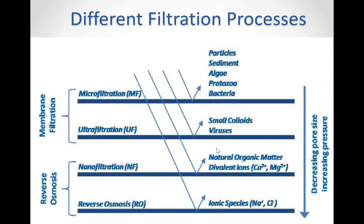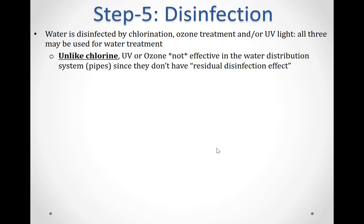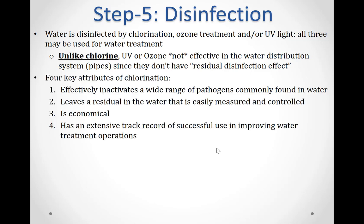In the diagram that follows, you can see different membrane filtration processes and what they can be used for. The fifth step is disinfection. After water has been filtered, a disinfectant may be added in order to kill any remaining parasites, bacteria, and viruses, and to protect the water from germs when it is piped to homes and businesses. Chlorine, ozone, and UV light may all be used as disinfectants. Unlike chlorine, however, UV or ozone are not effective in the water distribution system since they don't have a residual disinfection effect. Chlorine has four key attributes: one, it effectively inactivates a wide range of pathogens commonly found in water; two, it leaves a residual in the water that is easily measured and controlled; three, it is economical; and four, it has an extensive track record of successful use in water treatment operations.